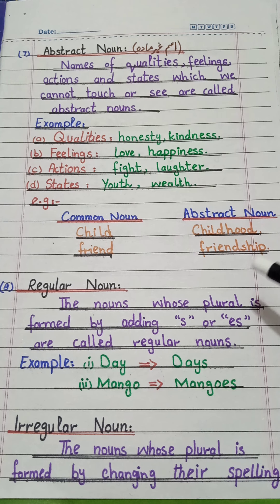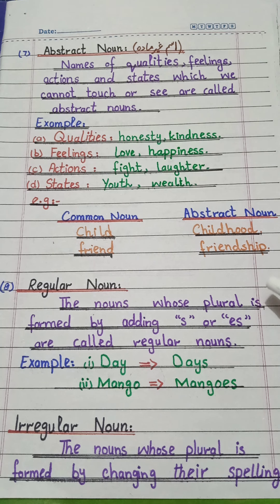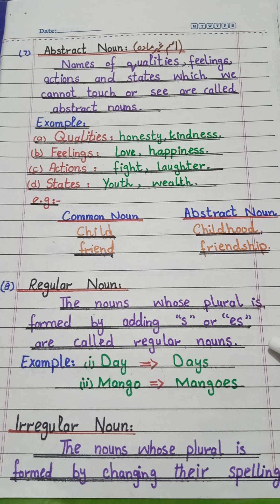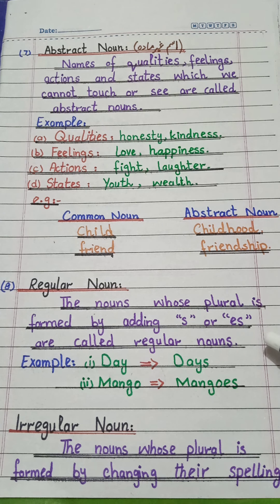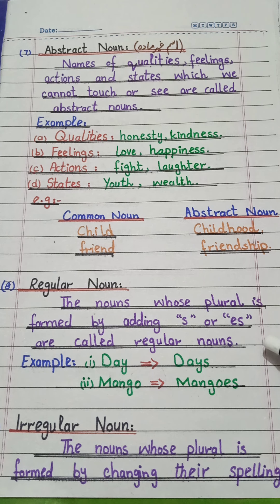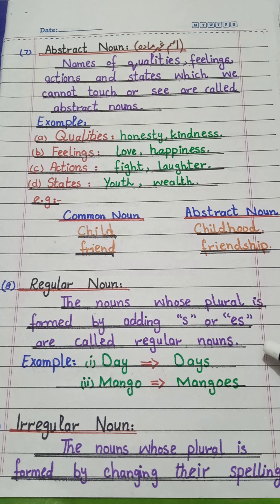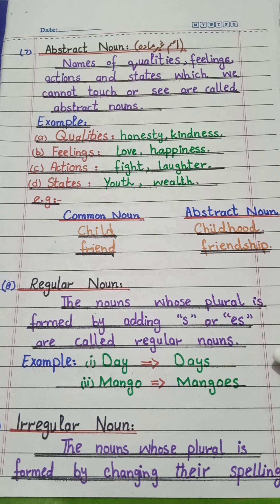Our next type is regular noun. The nouns whose plural is formed by adding 's' or 'es' are called regular nouns. Examples: day → days, mango → mangoes. You can see 's' is added to 'day' to make 'days', and 'es' is added to 'mango' to make 'mangoes'. That is why this type is called a regular noun.